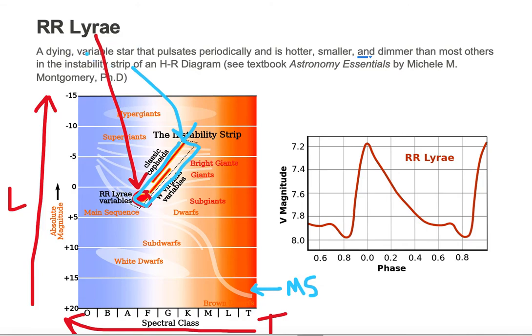Now RR Lyras are dying stars that pulsate periodically. And here we're looking at a profile of their pulsation. We're looking at how bright they appear on the vertical axis in the V-band, and we're basically looking at time on the horizontal axis.